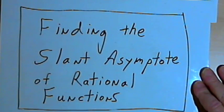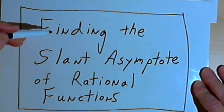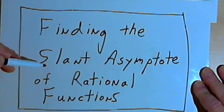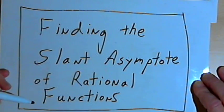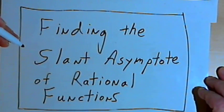This video is provided as supplementary material for courses taught at Howard Community College. In this video I want to show how to find the slant asymptote of rational functions. Slant asymptotes are also called oblique asymptotes.